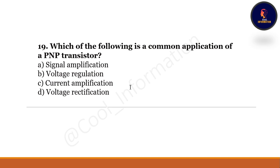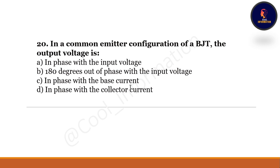Next question: Which of the following is a common application of a PNP transistor? Option A: signal amplification. Option B: voltage regulation. Option C: current amplification. Option D: voltage rectification. The correct option is voltage regulation.